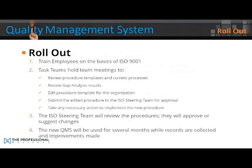Rollout. Step 1: train employees on the basics of ISO 9001. Step 2: task teams hold team meetings to review procedure templates and current processes, review gap analysis results, edit procedure templates for the organisation, submit the edited procedure to the ISO steering team for approval, and take any necessary action to implement the new procedure. Step 3: the ISO steering team will review the procedures — they will approve or suggest changes. Step 4: the new QMS will be used for several months whilst records are collected and improvements made.